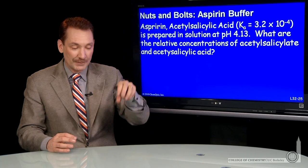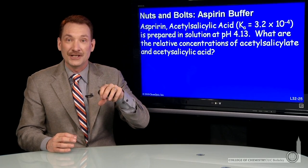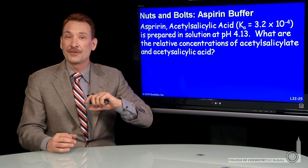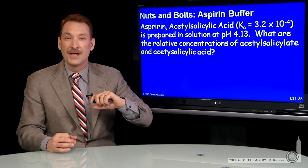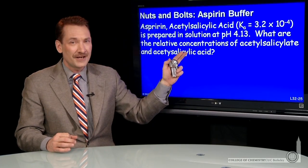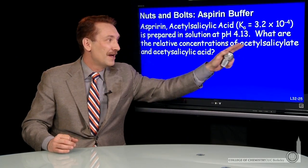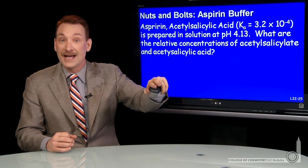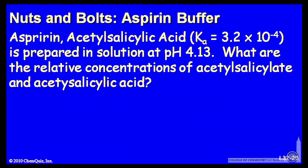Now I can put it in solution and then adjust the pH to 4.13. When I do that, what are the relative concentrations of acetylsalicylate, the conjugate base ion, and acetylsalicylic acid?